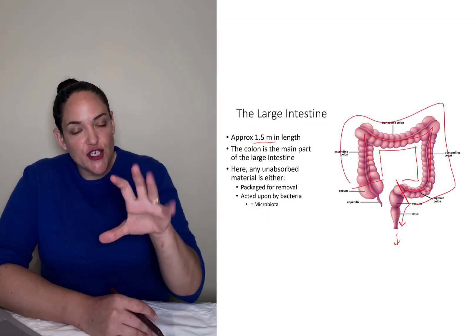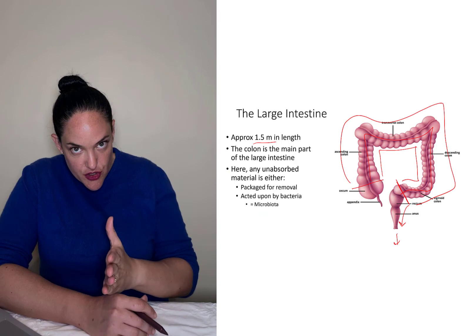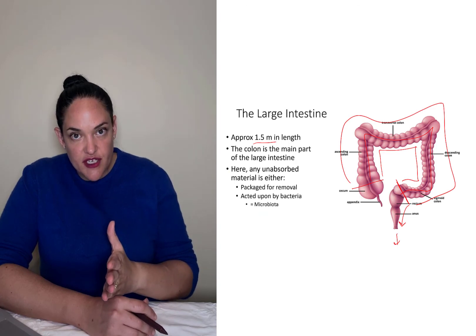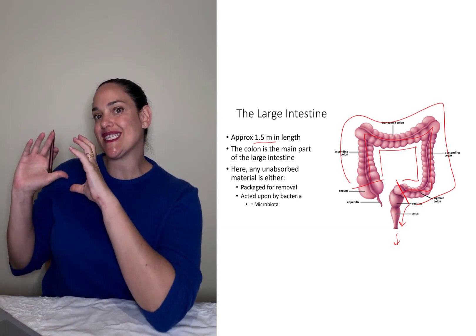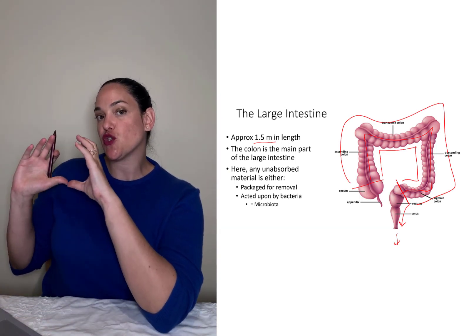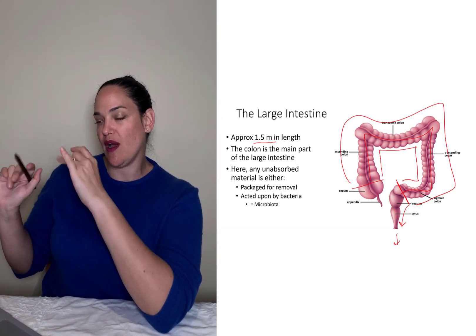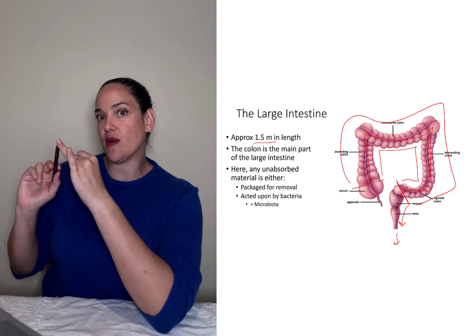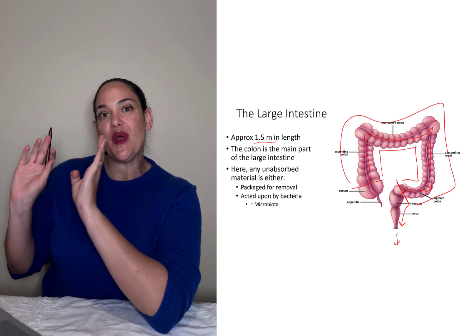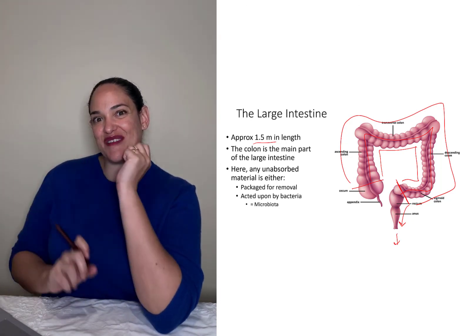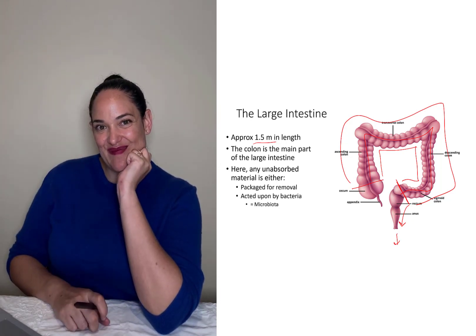In addition to these primary structures of the digestive tract, we also have accessory structures — the liver, pancreas, and gallbladder — which will be covered in the next video.